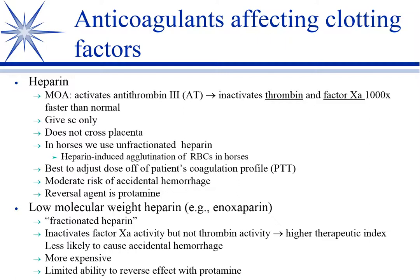Enoxaparin has largely replaced regular heparin in small animals. When I say heparin here, it's often called unfractionated heparin — it's got a mix of molecular weights and inhibits both thrombin and factor Xa. Because of cost, we still use it in horses, particularly for laminitis. We don't totally understand the pathophysiology of laminitis, but we know thrombi form in the vessels in the hoof wall and lamina. So it's not uncommon for heparin to be given to horses prophylactically to try to prevent laminitis.